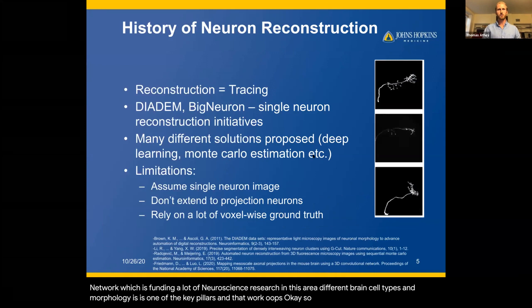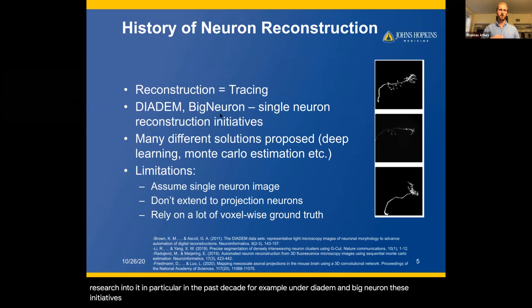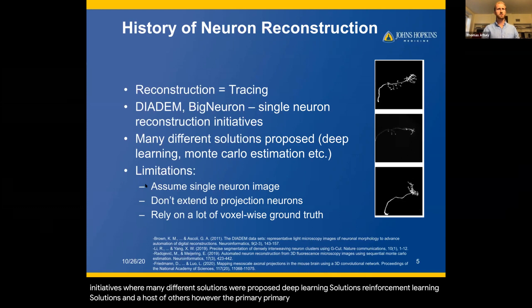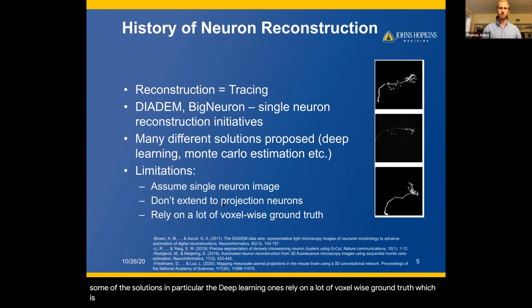Neuron reconstruction, or the tracing of neurons to study morphology, is not a new research area. There's been a lot of research, particularly in the past decade under Diadem and BigNeuron initiatives where many different solutions were proposed — deep learning solutions, reinforcement learning solutions, and others. However, the primary limitations of existing methods are that they assume a single neuron in the image, they don't extend well to projection neurons, and deep learning solutions in particular rely on a lot of voxel-wise ground truth, which is hard to come by.